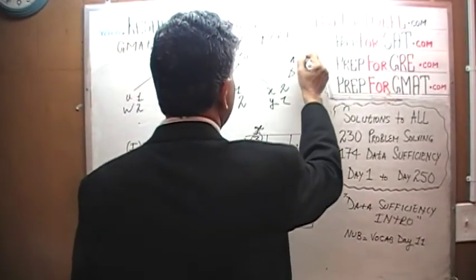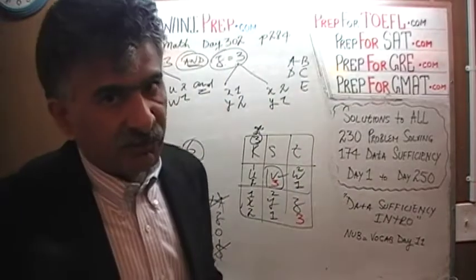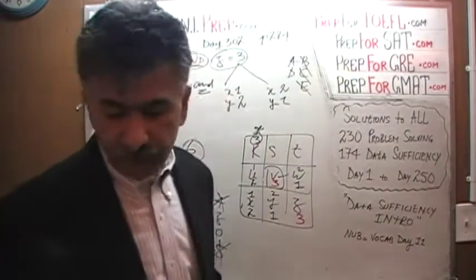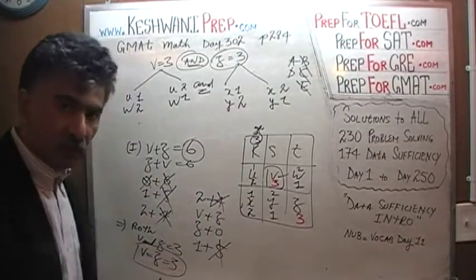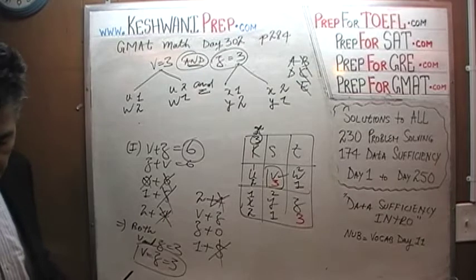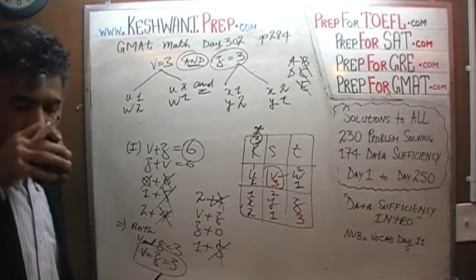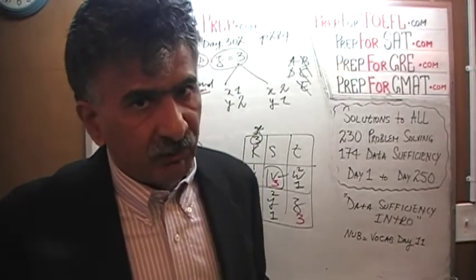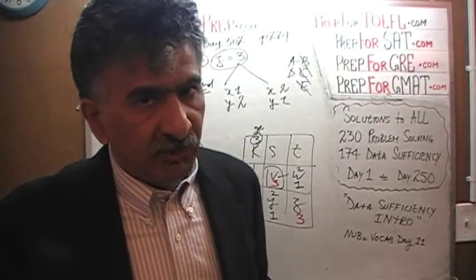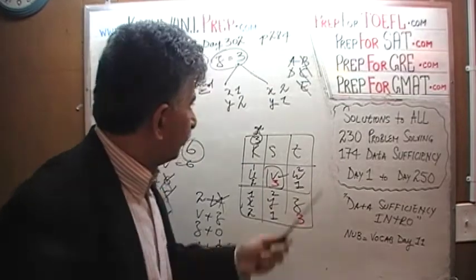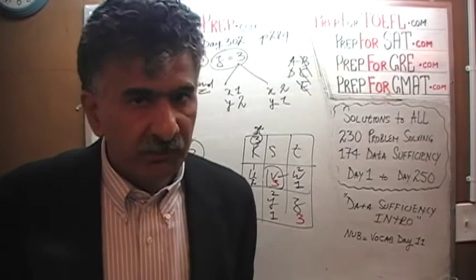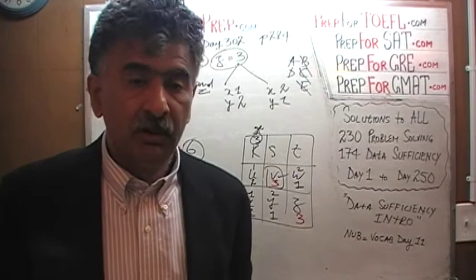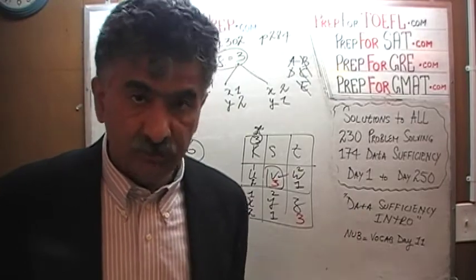Now that the first statement by itself is sufficient, the answer cannot be B, C, or E — it would have to be A or D. In a problem like this, if you are running out of time and it takes too much time to analyze one statement, there is no shame in making a 50-50 guess and moving on. Just pick one answer choice and move on if time is running out. A 50% chance on a question like this is a good chance.